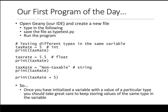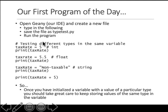Let's look at our first program. Go to Genie, open the editor, save the file as typetest.py, and copy-paste all these lines starting from this hash sign down to this print tax rate plus 5, and see what's happening.